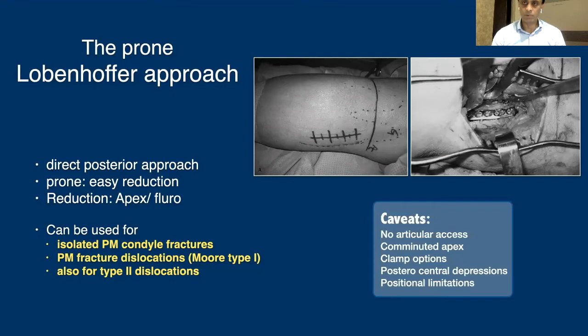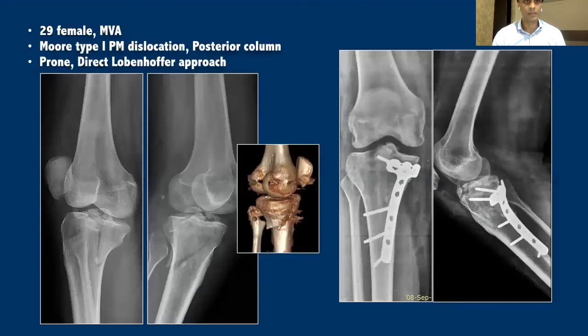What are the caveats of the prone posterolateral approach? You have to remember there is no direct articular access. So if you need articular access, you are limited. Also, if you have a comminuted apex, sometimes you cannot rely on apical reduction and you have to confirm anatomical articular surface reduction by other means. Clamp options are also limited, especially if the patient is not positioned correctly. Postcentral depressions can be dealt with through this approach, but it is much easier to do in a supine position, so there are positional limitations as well.